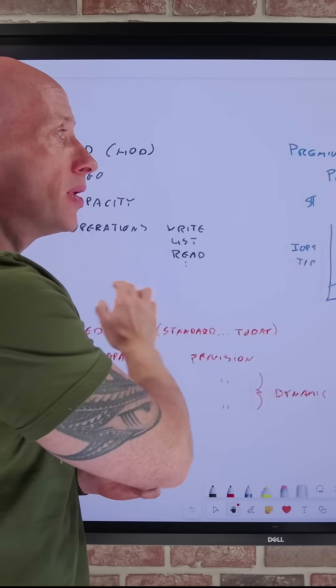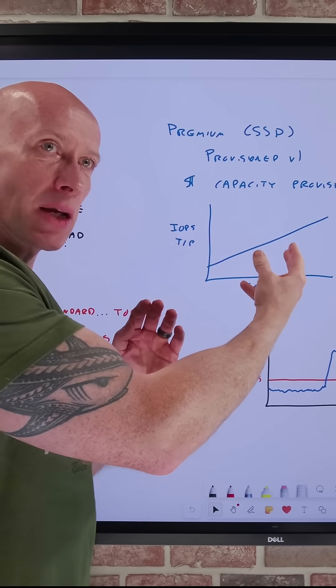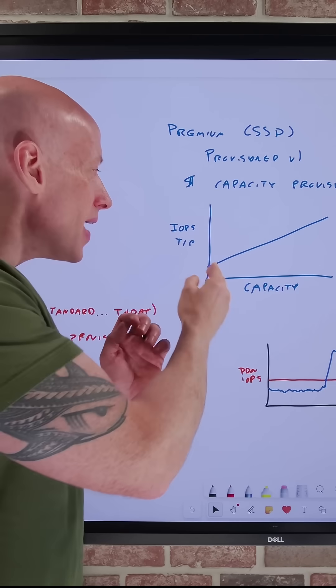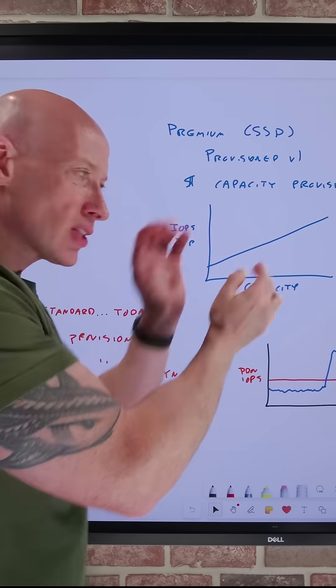On premium, we pay for the provisioned amount of capacity, not the amount used, and the performance scales based on that capacity.